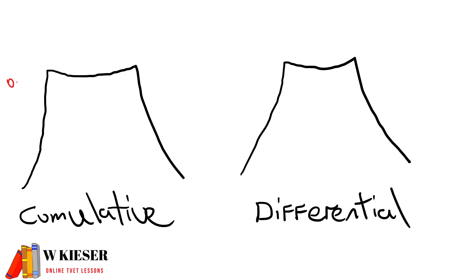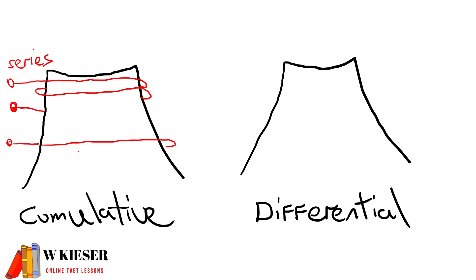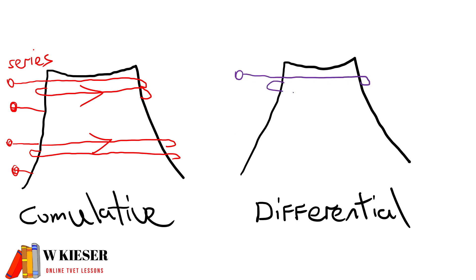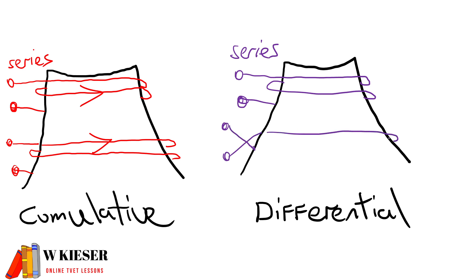To show the electrical connection difference between cumulatively and differentially compounded machines: a compound machine consists of two windings — the series winding and the shunt winding — wrapped around the field poles. If cumulatively compounded, the field windings are wound in the same direction. For a differentially compounded machine, the shunt winding is wound in the opposite direction so the field windings oppose each other.